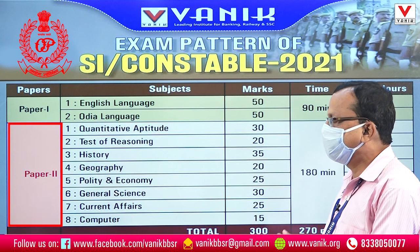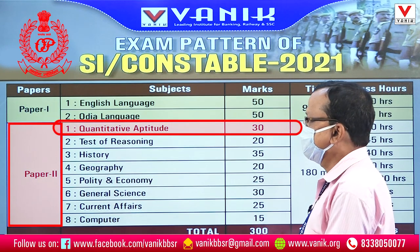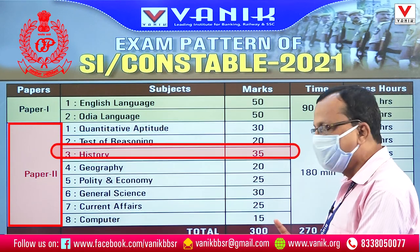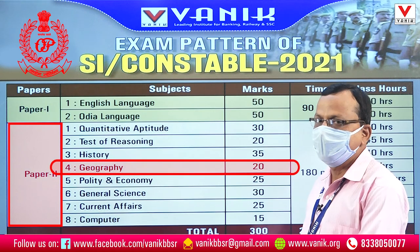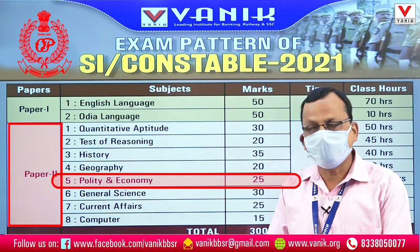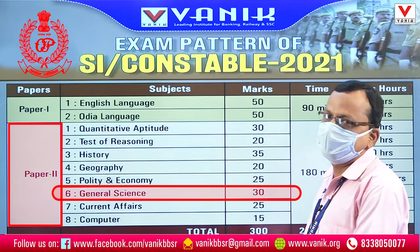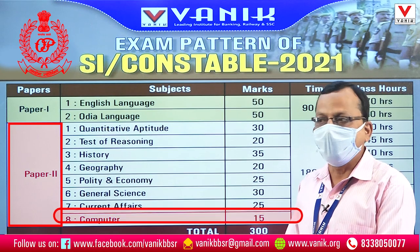In Paper 2, we have aptitude, reasoning, history, geography, policy and economy, general science, current affairs, and computer.